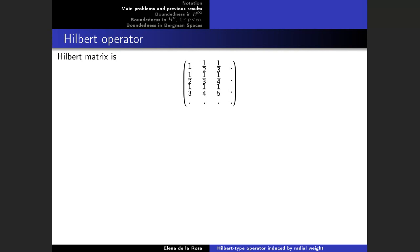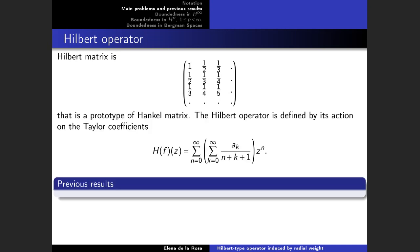Our problem is closely related to the Hilbert operator, so I'm going to recall some definitions and previous results. The Hilbert matrix is this matrix — it is a prototype of a Hankel matrix. We can define the Hilbert operator by multiplying each row of this matrix by the column of coefficients of an analytic function, and then the Hilbert operator is defined by the resulting series whenever it is well defined and defines an analytic function.